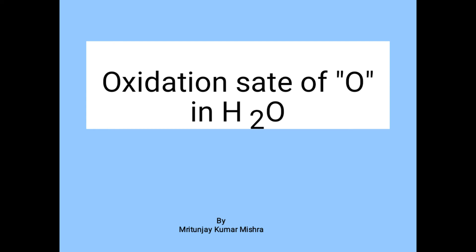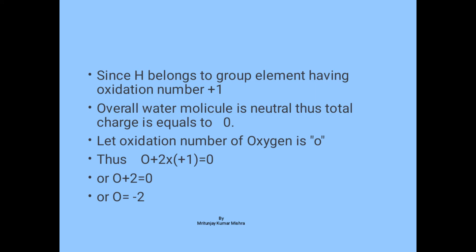so the overall charge is zero. Hydrogen belongs to first group of the periodic table, so its oxidation number is plus one. Let oxidation number of oxygen be O. Mathematically, it can be written as O plus two times plus one equals zero. Therefore, O plus two equals zero,